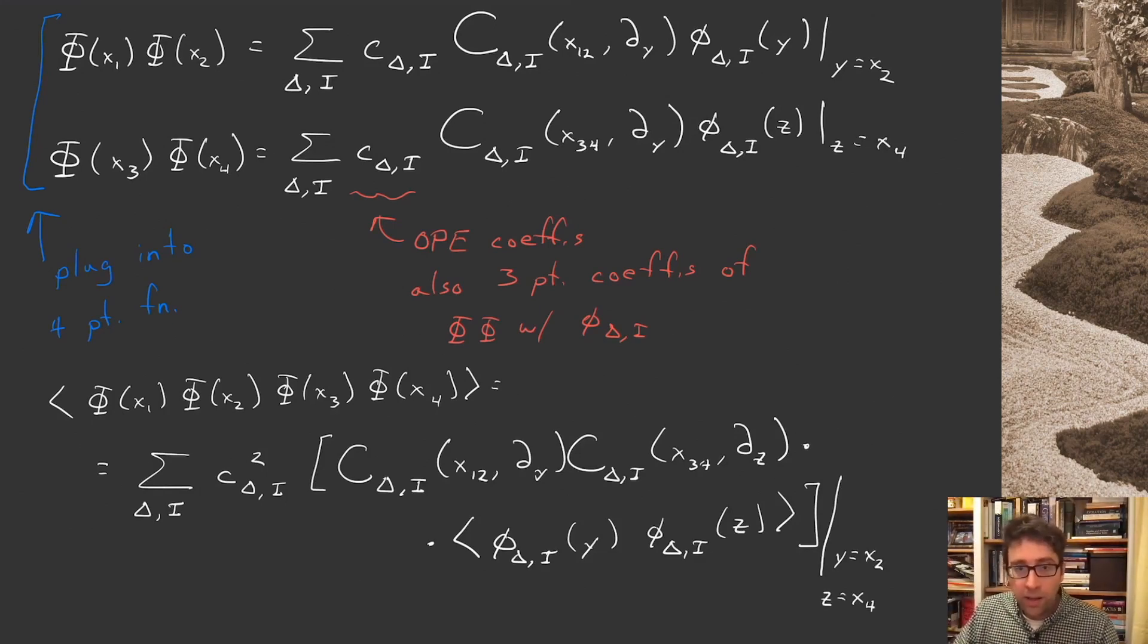Notice that naively it seems we have a double sum, a sum over the operators in the operator product expansion of phi x1, phi x2, and the operators in the expansion of phi x3, phi x4. But that two-point function is only non-zero when the representation data of the operators in the expansion agree. So the double sum collapses to a single sum. I just have a single sum over the operators in this expansion.